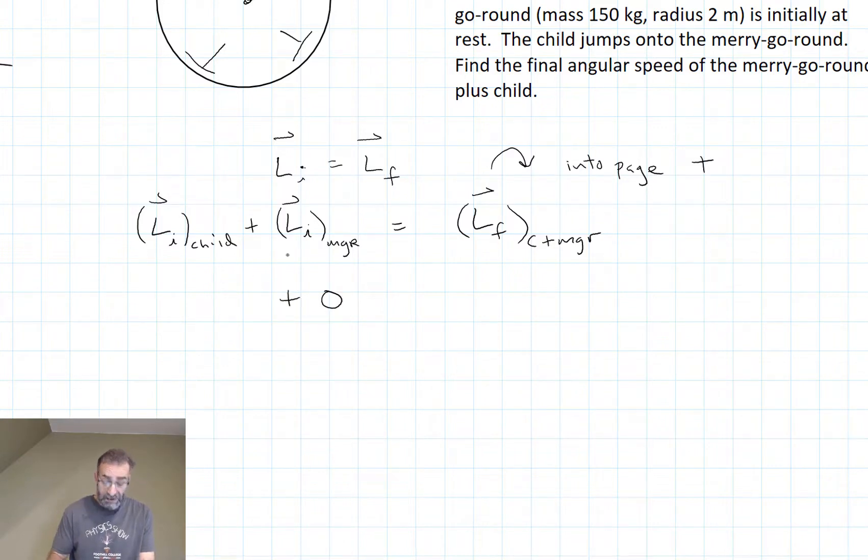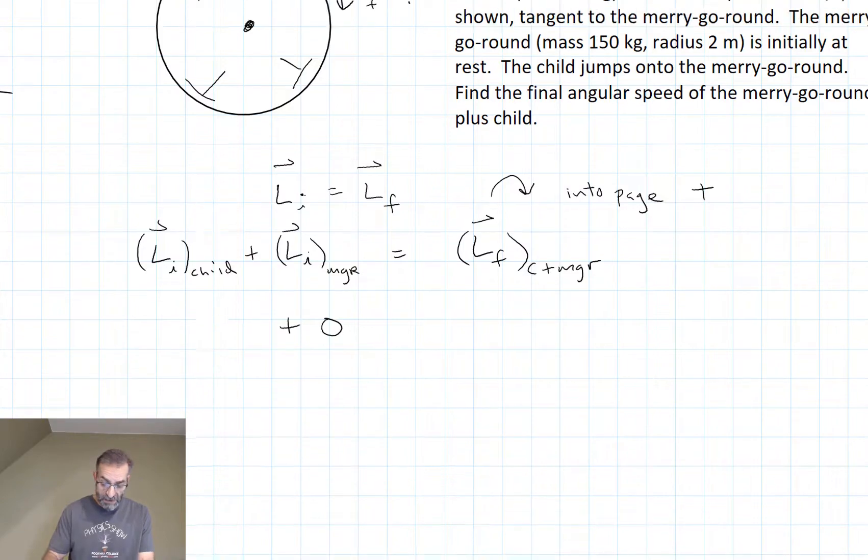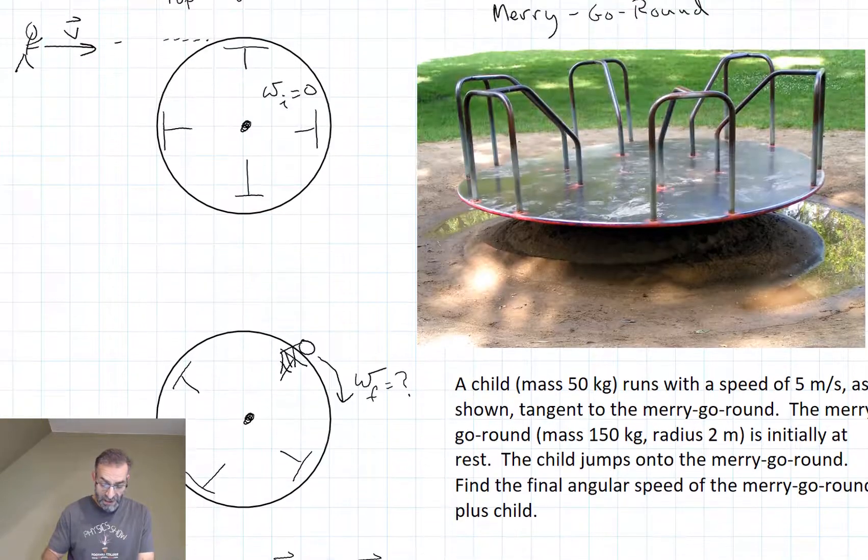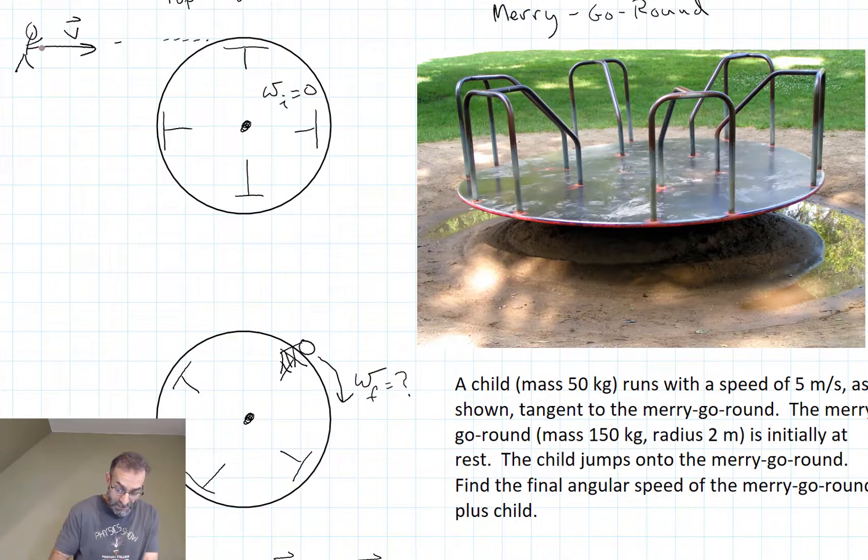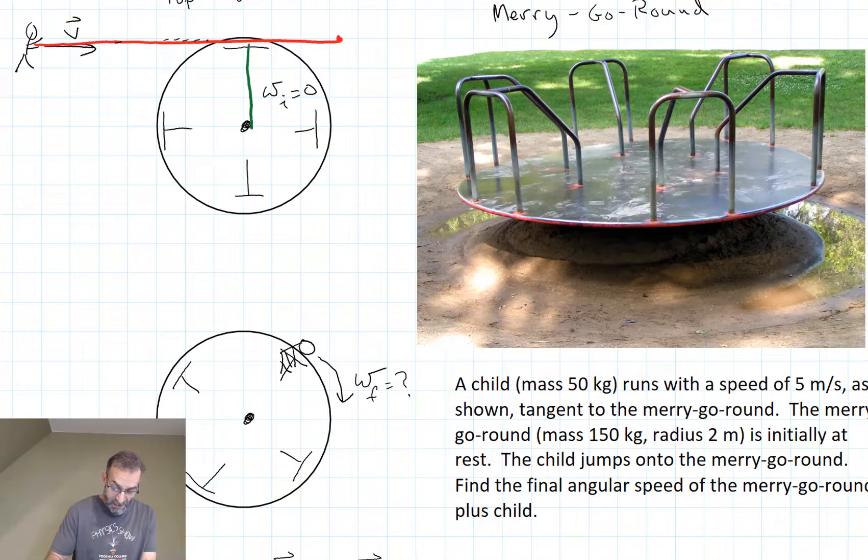The child is moving in a straight line. So we said last time, if we have an object moving in a straight line, it can have angular momentum if there's a perpendicular distance between their line of momentum and the axis of rotation.